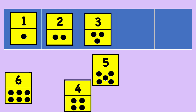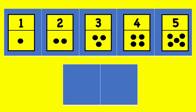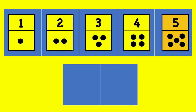4, 5. How are the dots in number 3 card different from number 4? That's right — number 4 card has one more dot. How are the dots in number 4 card different from number 5? You are correct, number 5 card has one more dot.